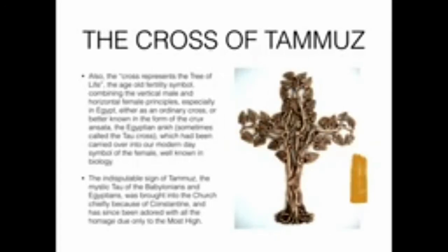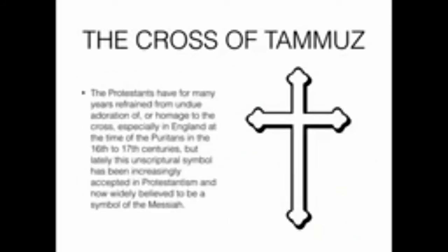The cross also represents the tree of life, the age-old fertility symbol combining the vertical male and horizontal female principles, especially in Egypt — either as an ordinary cross or as the crux ansata, the Egyptian ankh, sometimes called the tau cross, which has been carried over into the modern-day symbol of the female in biology. The indisputable sign of Tammuz — the mystic tau of the Babylonians and Egyptians — was brought into the church chiefly because of Constantine and has since been adored with homage due only to the Most High.